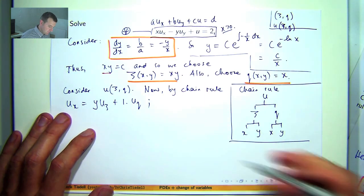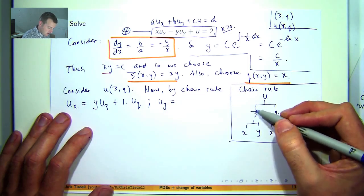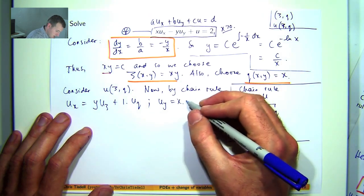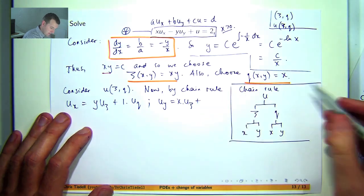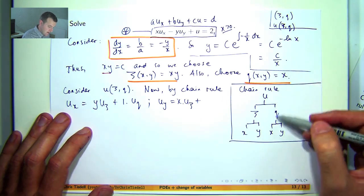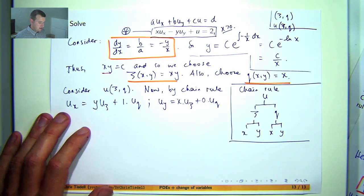Let's go down all the paths leading to a y. So u sub psi times psi sub y. So eta sub y is going to be x, plus u sub eta times eta sub y. Now this doesn't depend on y, so eta sub y is 0.